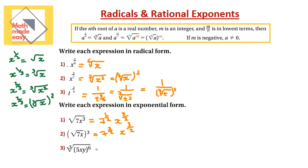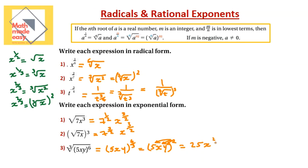For the last one: 5xy all to the power of 6 under the cube root. So I have 5xy all to the power of 6 over 3. Simplifying, 6 divided by 3 is 2, so we distribute the power: 5 squared is 25, x squared, and y squared. The answer is 25x squared y squared.